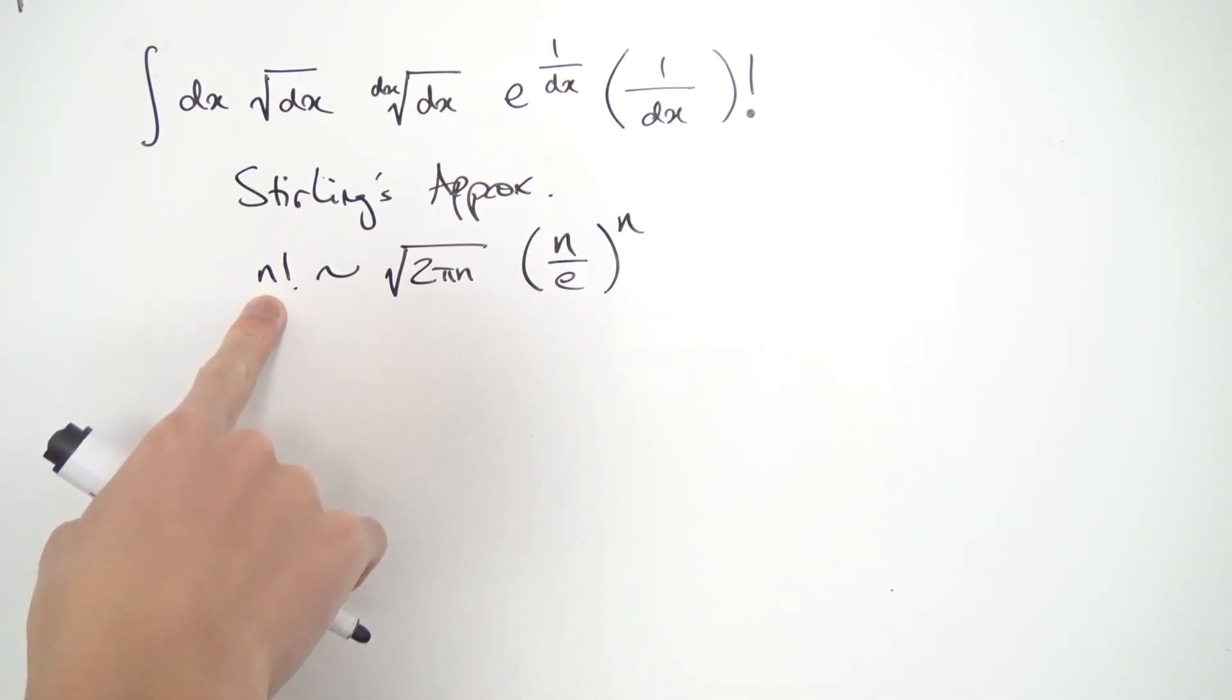So as n becomes very, very big, it looks similar, it gets closer and closer to this expression over here. So these two functions are asymptotically equivalent.